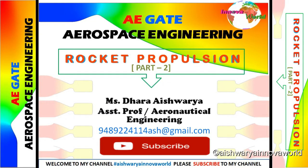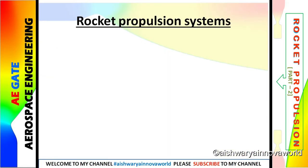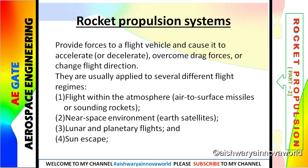Hi guys, welcome to my channel. Today we are going to see rocket propulsion part 2. So first I will give you an intro about the rocket propulsion system. It works on its principle to accelerate and overcome the drive forces and change the flight direction. The four basic applications of this rocket propulsion system are: flight within the atmosphere, near space, planetary flight, or a sun escape.